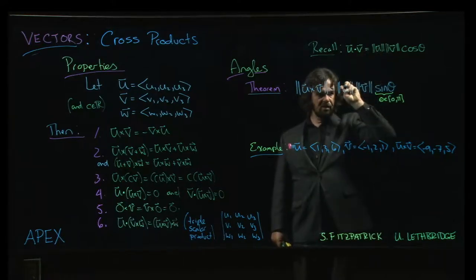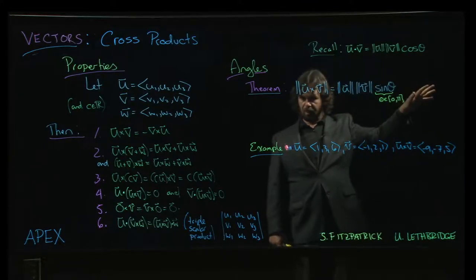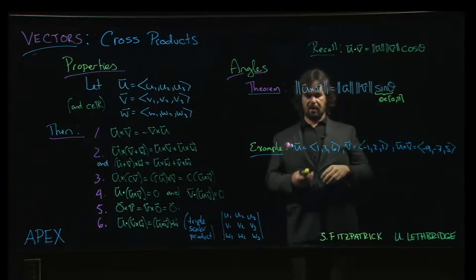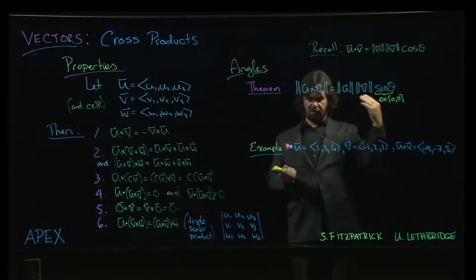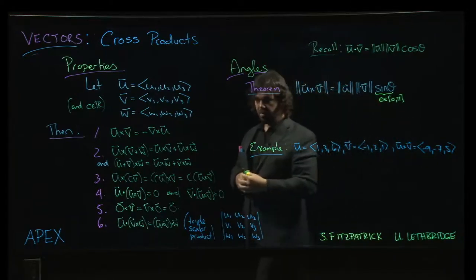factor out all the magnitude, then you're going to see that you're left with like a 1 minus cos squared. You're going to get the dot product squared is going to be in there. And so you have a 1 minus cos squared, which of course is sine squared. And you take the square root of everything and there you go. You've got your theorem.